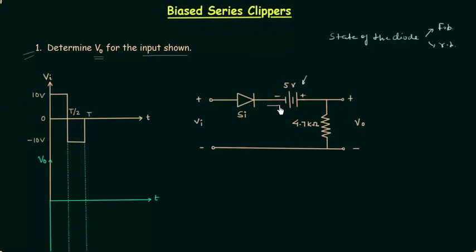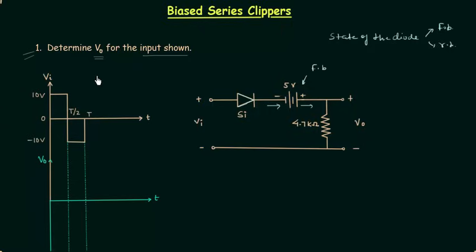The current will have this direction because of the DC source, entering the negative terminal and starting from the positive terminal. This direction of current is matching with the direction of the arrow in the diode symbol, so this 5V supply is forward biasing the PN junction diode. Now we will plot the output waveform for the first half cycle from 0 to T/2, where VI is equal to 10V throughout.